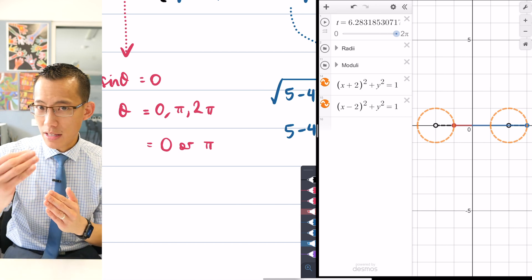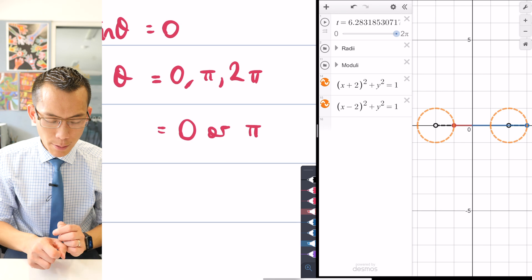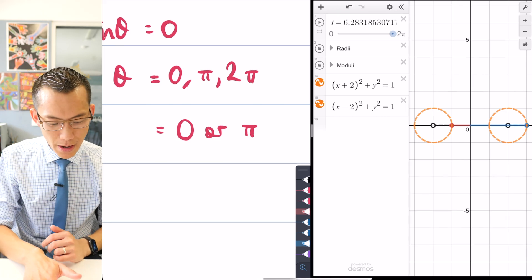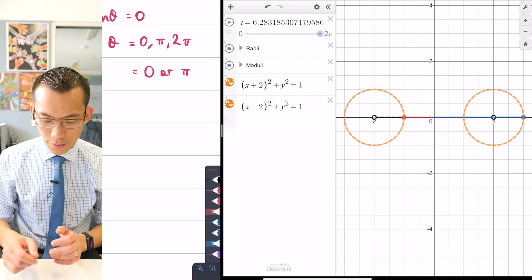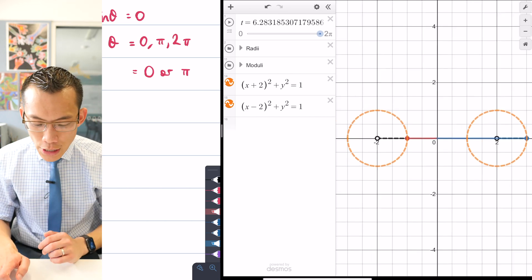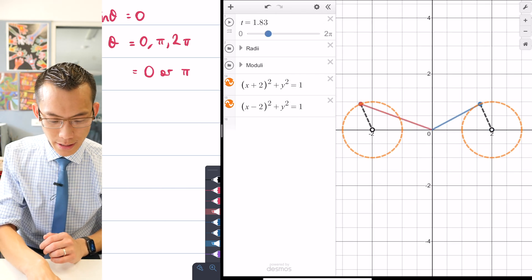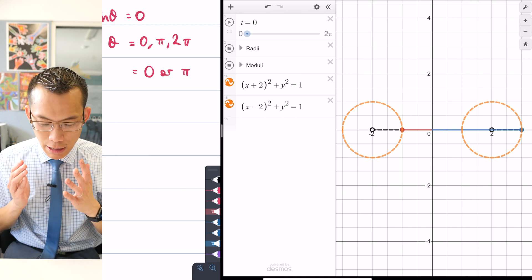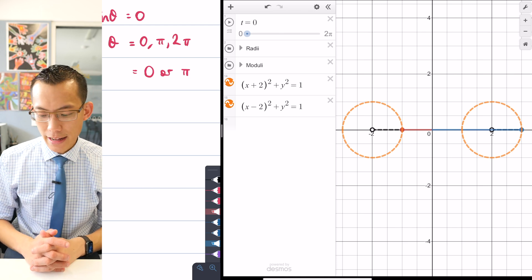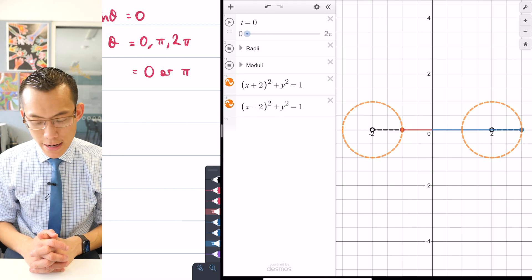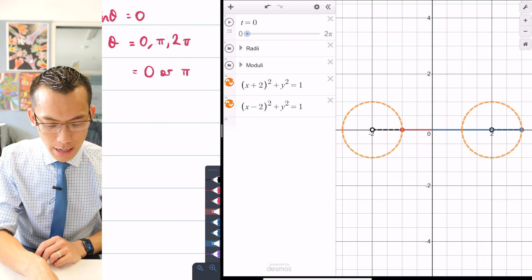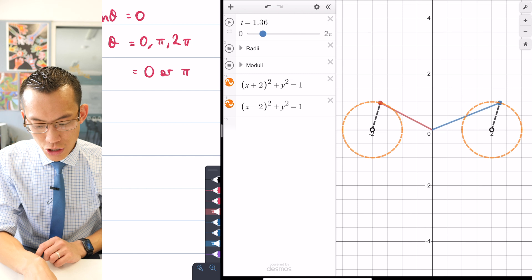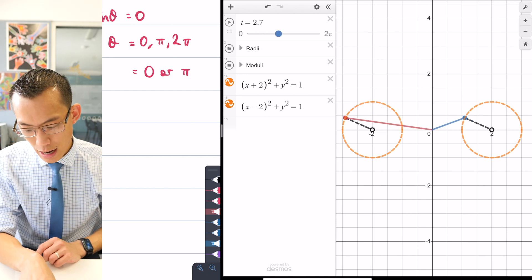But you can actually go one step further and you can see that, for example, between 0 and π, only one of these solutions is relevant. Let's see why. If you have a look at this θ = 0 situation, you can see that the red magnitude here is 1 and the blue magnitude is 3. But if we go over to the θ = π situation, this winds us over to the other side of each of the circles.